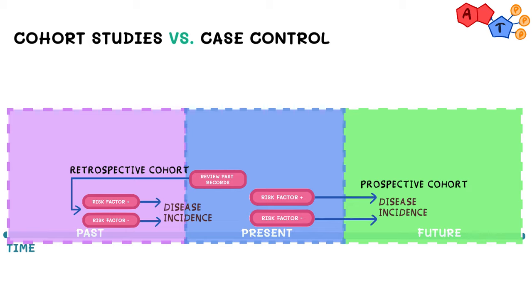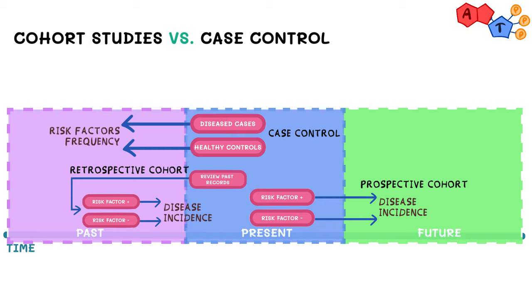A case control study would be more fixated on the outcome of interest and have first divided the participants based on whether they had lung cancer or not. To summarize, cohort and case control are observational studies that can help us draw comparisons between a group based on a risk factor or an outcome of interest.